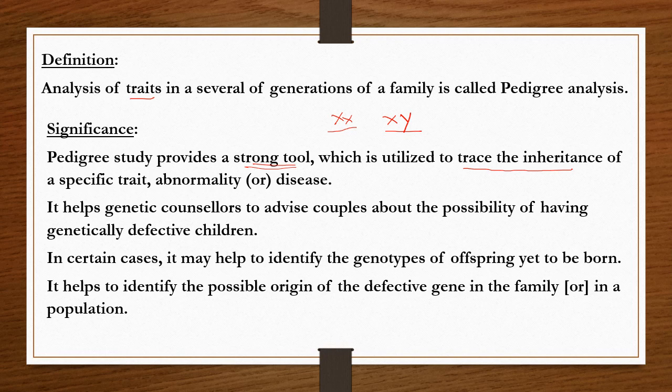Using such methods, genetic counselors can advise couples about the possibility of having genetically defective children. In certain cases, pedigree analysis may help to identify the genotypes of offspring yet to be born — not already born, but yet to be born before delivery.